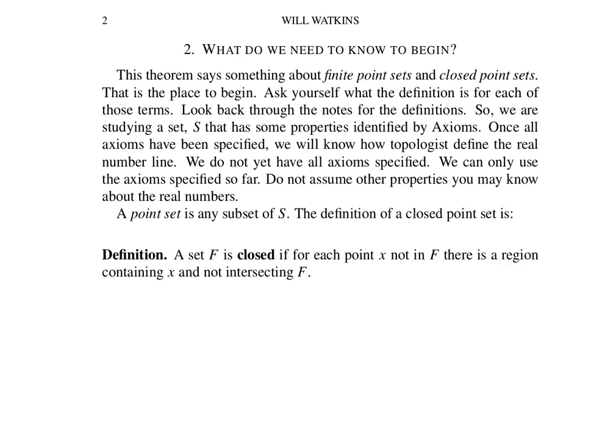Don't assume any properties about the real number line that haven't been specified in the axioms. So we're talking about sets here, often we call them point sets, and those are always subsets of this space S that finally when we're through defining all the axioms is going to be the real number line.